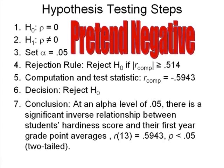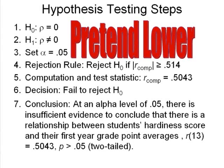That's not the case here. Let's also see what we would have done if we would have gotten a score that was lower than .514, so was not significant. What if we had computed our RComp and it would have been .5043? In that case, our decision would be fail to reject H0, and our conclusion would be: at an alpha level of .05, there is insufficient evidence to conclude that there is a relationship between students' hardiness scores and their first-year grade point averages.